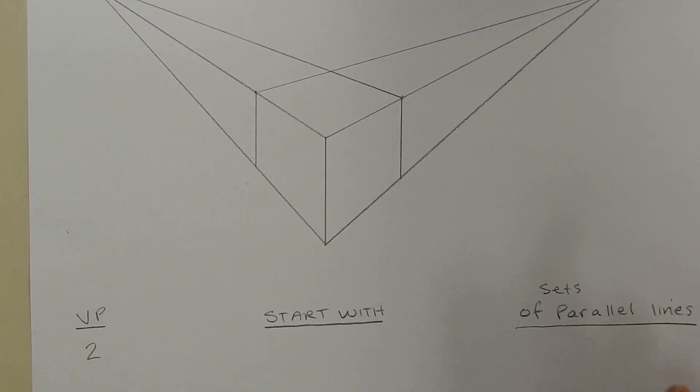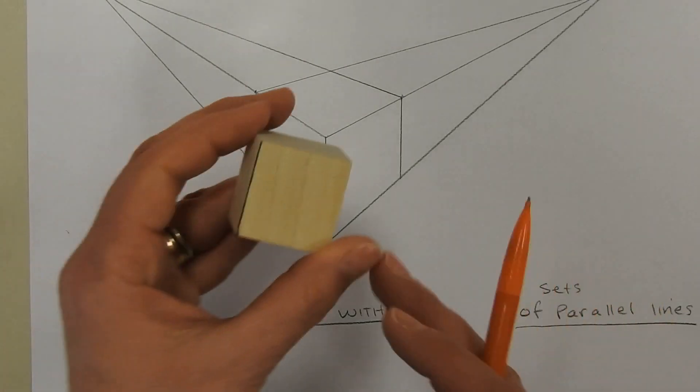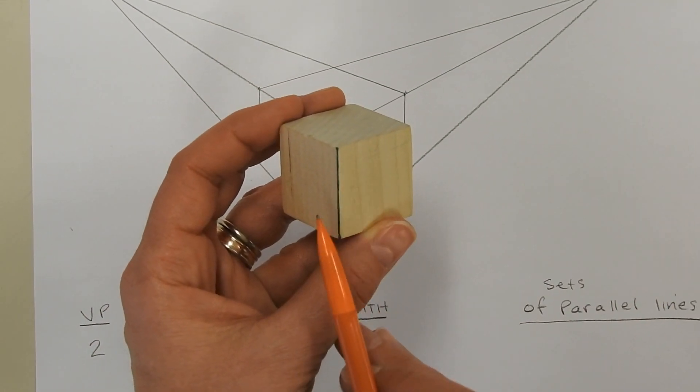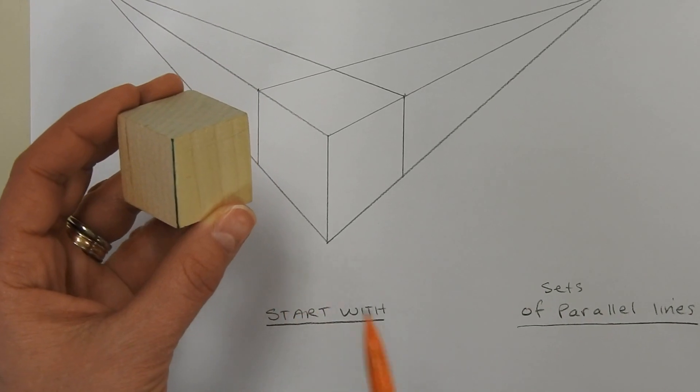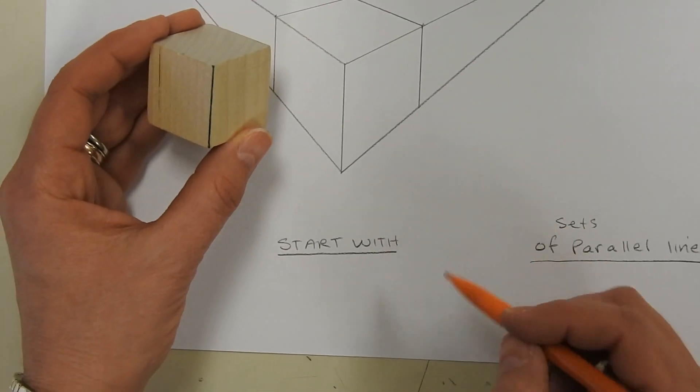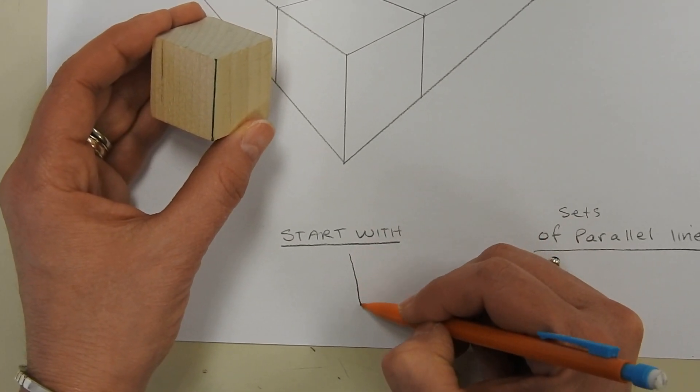When we begin to draw for two point, when we're doing a cube, we're looking at that leading edge. So we're going to start with not a shape, but a line.